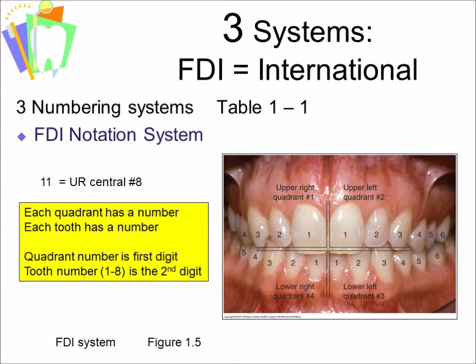The third way to name teeth is the FDI System, or International Federation System. This system is used by the rest of the world — the US uses the Universal System and other countries use the International System. The International System uses the quadrant number first, then names the tooth one through eight from the midline. Each tooth has two numbers: the first is the quadrant number, and the second is the tooth number counted from the midline.